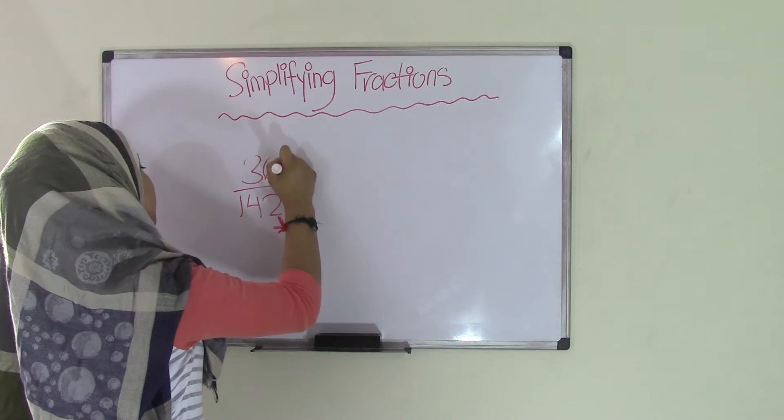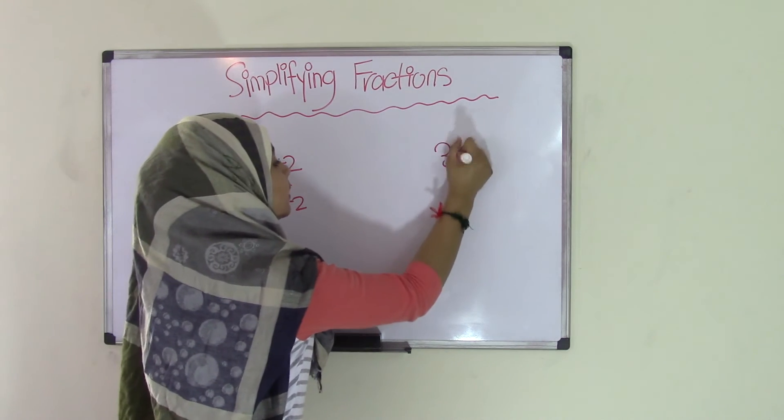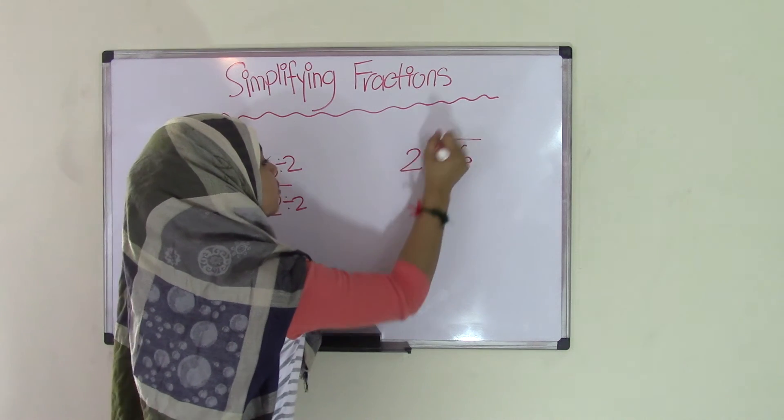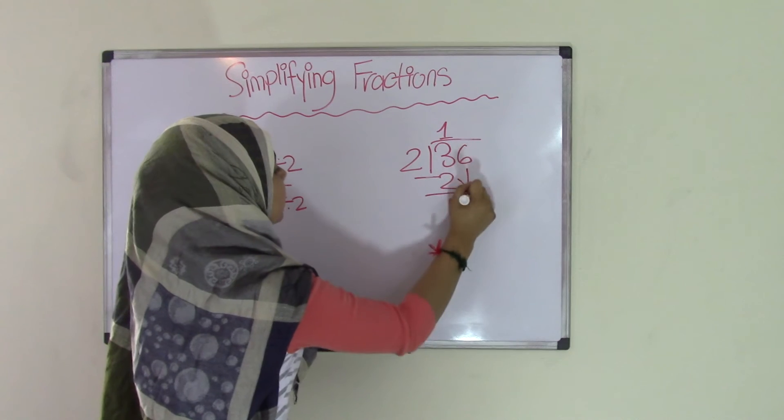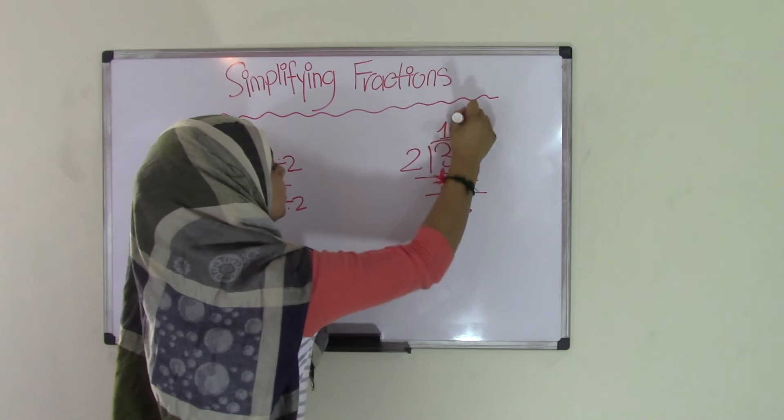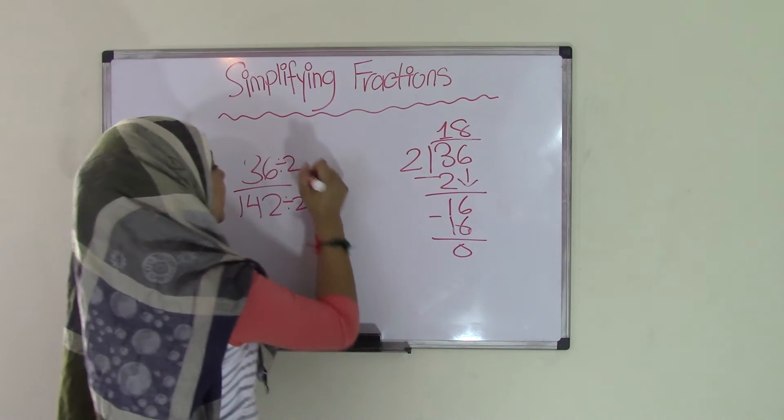So if we do 36 divided by 2 and 142 divided by 2. 36 divided by 2. 2 times 1 is 2. Get 1. Bring down the 6. And 2 goes into 16 8 times. So our quotient is 18.